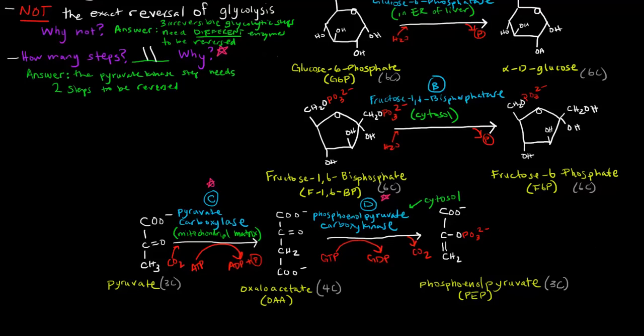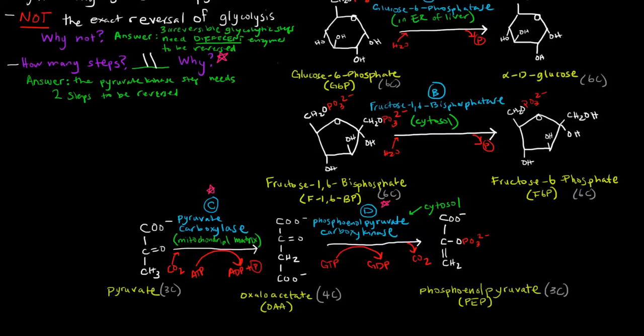That's essentially it for gluconeogenesis. In the next video, I'll talk about how some of these enzymes are allosterically regulated. Every other step in gluconeogenesis was reversible from glycolysis, so you would just write the arrow going in the other direction.